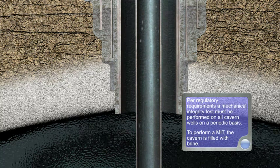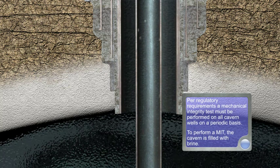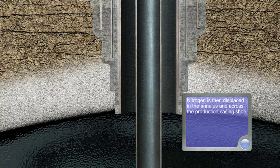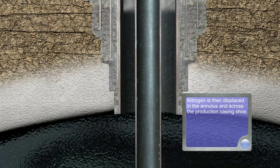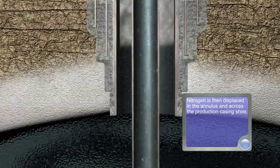To perform a MIT, the cavern is filled with brine. Nitrogen is then displaced in the annulus and across the production casing shoe.